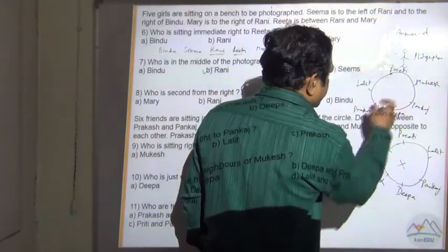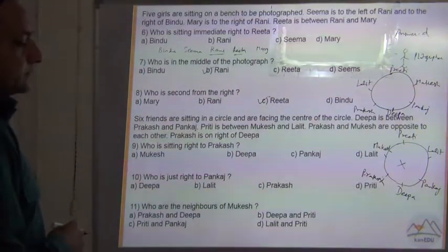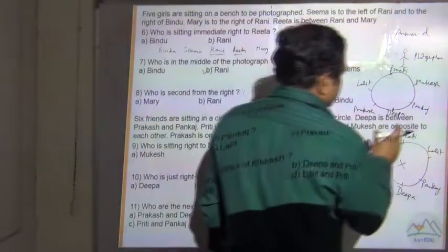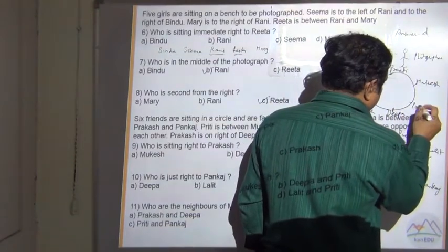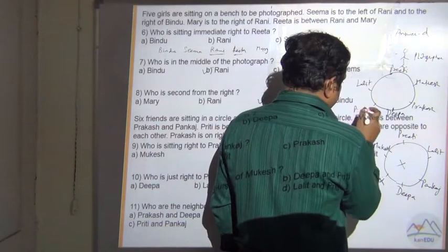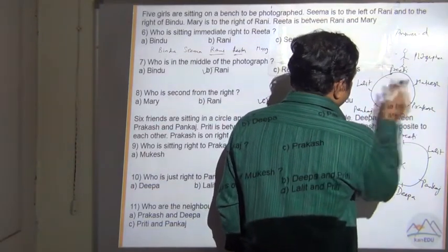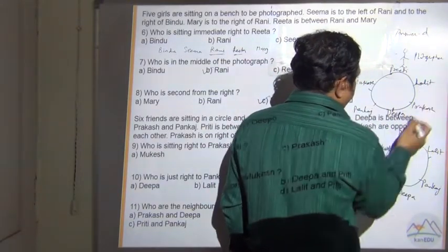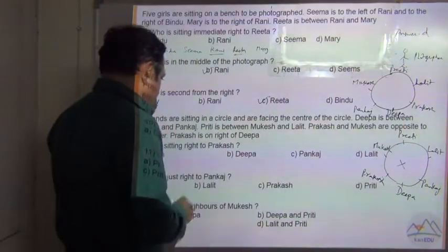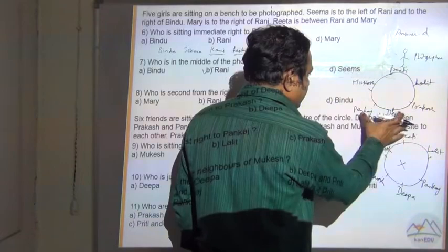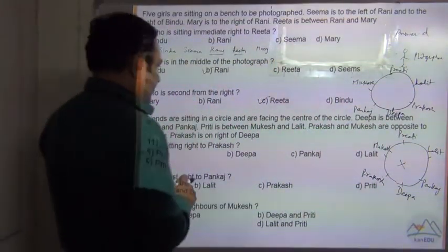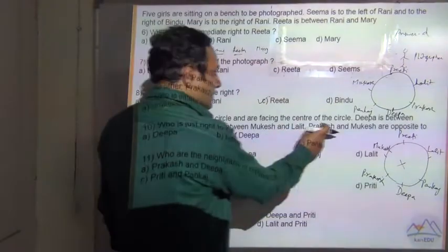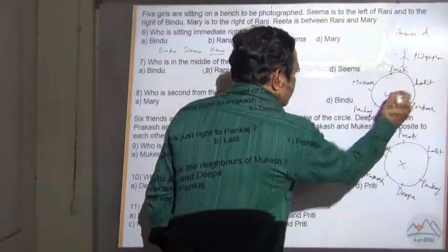They have to be opposite to each other. Prakash is on the right of Deepa, so Pankar is on the other side of Deepa. Mukesh then falls opposite Prakash, and Lalit is placed accordingly — because Preeti is between Mukesh and Lalit. This is the correct final combination.